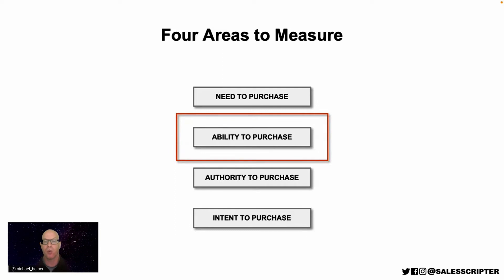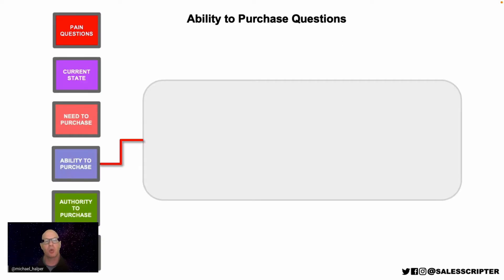The second area is the ability to purchase — basically, does the prospect have the money to purchase what you're trying to sell them? If the prospect needs what you sell but doesn't have a job or income, they don't have the ability to pay for it. Even if there is a clear need, that prospect might not be qualified.